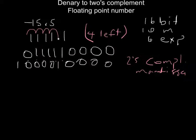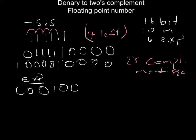Next, I want to work on my exponent. I'm going to convert the number of places I moved — in this case 4 — to binary, which is 1 0 0, and pad it to the right until I have 6 bits. Then I check: if I moved to the left, I keep it as-is; if I moved to the right, I convert to 2's complement. Since I moved to the left, this is my exponent.